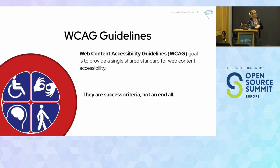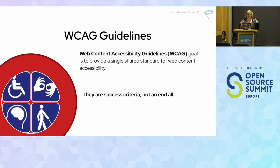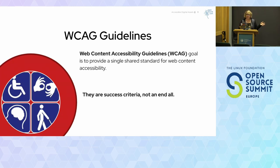The World Wide Web Consortium — the W3C — has developed the WCAG guidelines, the Web Accessibility Guidelines. This serves as a single standard to normalize how we measure accessibility internationally. It's developed with that shared single goal, meeting not only the needs of individuals but also the needs of governments internationally and organizations. These are success criteria set up like guidelines — they're not an end-all, but they're a really nice starting point.